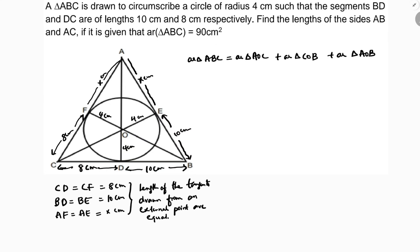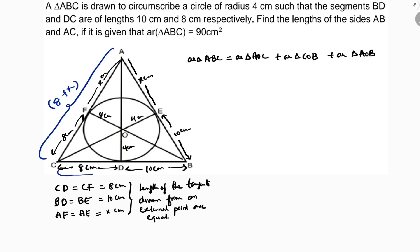For triangle AOC, the base is AC which is 8 plus X, and the height is OF which equals 4, since the angle between the radius and tangent is 90 degrees. For triangle COB, base is CB which is 8 plus 10 equals 18. For triangle AOB, base is AB which is 10 plus X, and height is OE equals 4.